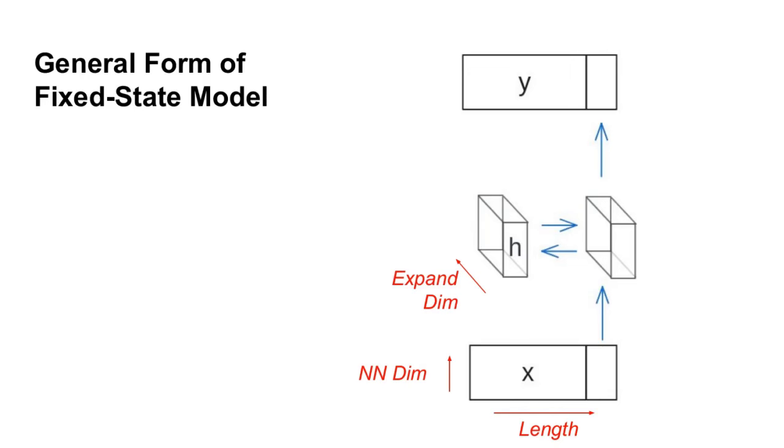Our input will be x. x is a matrix that represents the length of our sequence by the neural network dimension. We'll sometimes refer to this neural network dimension as the number of channels. We're going to process each element of x by combining it with the previous hidden state to produce a new hidden state.